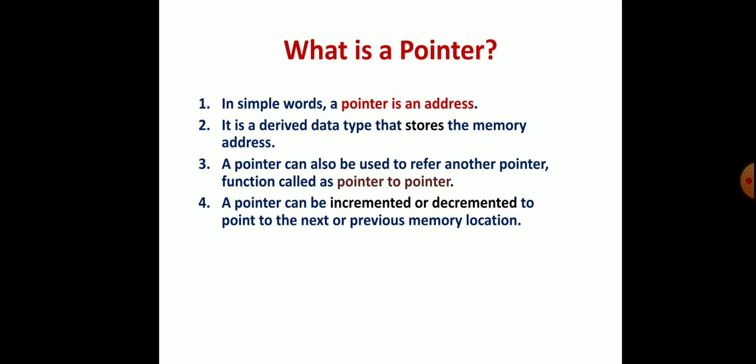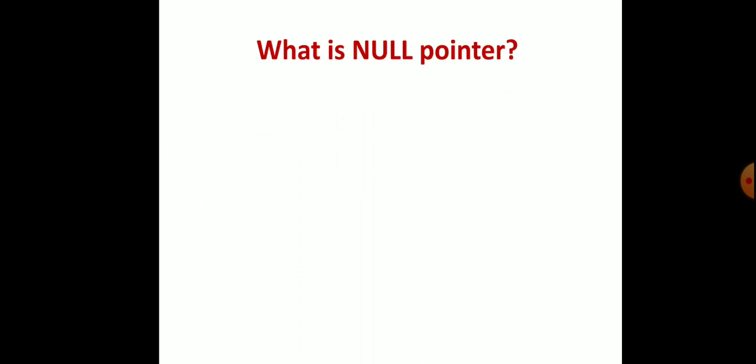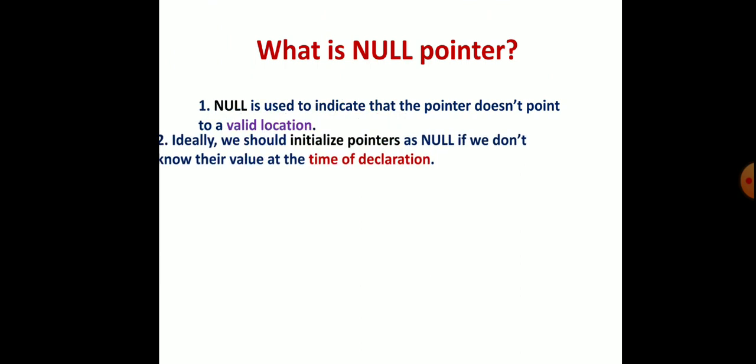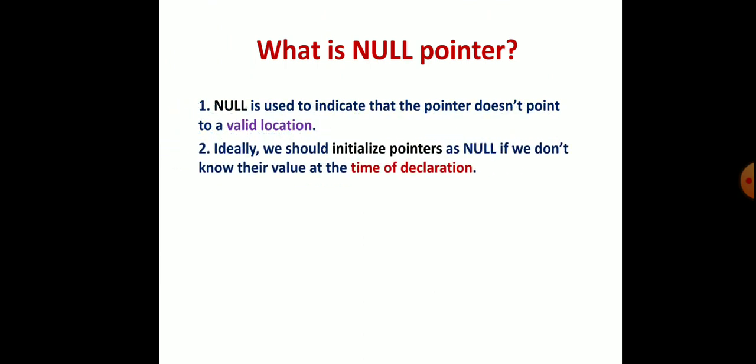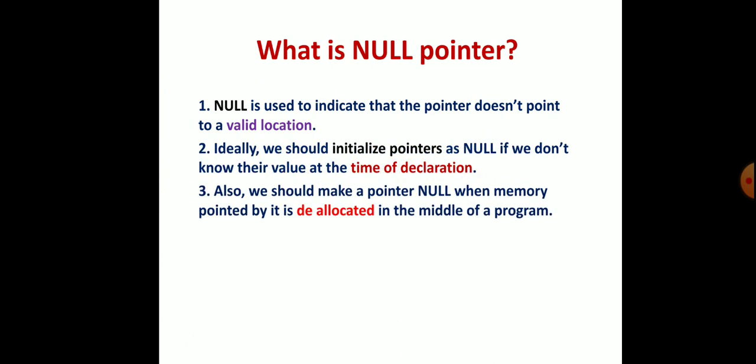What is a null pointer? A null pointer is used to indicate that the pointer doesn't point to a valid location. Ideally, we should initialize a pointer as null if we don't know its value at the time of declaration, so later you can retrieve it. Also, we should make a pointer null when memory pointed by it is deallocated in the middle of a program. These are the things you have to remember about null pointers.